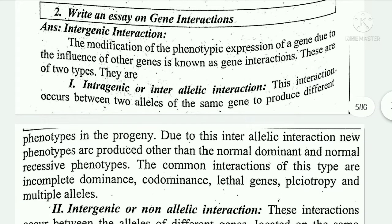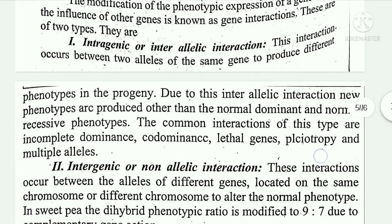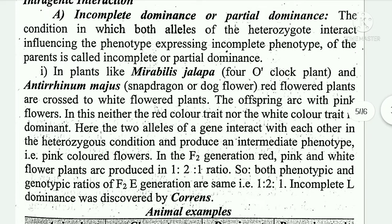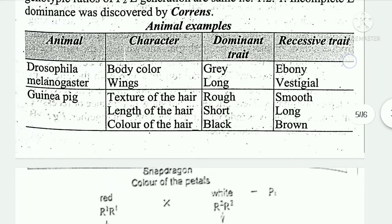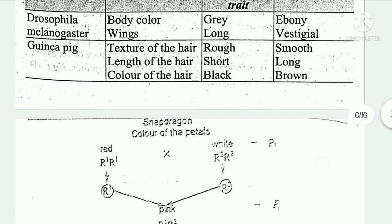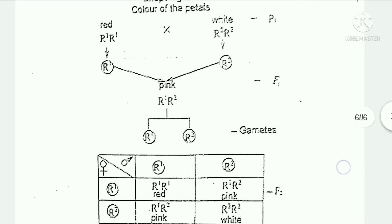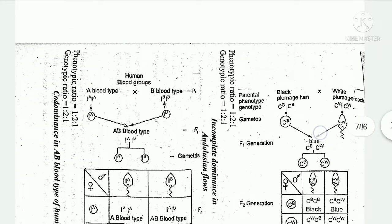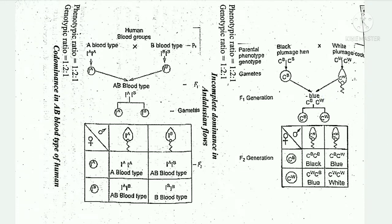Second important question: write an essay on genic interactions. This is confirmed as very important. On one side we have the animal name, characters, dominant trait, and recessive trait. The first animal is Drosophila melanogaster and guinea pig. The traits and dominance are discussed, including incomplete dominance in Andalusian fowls.